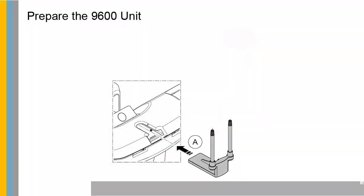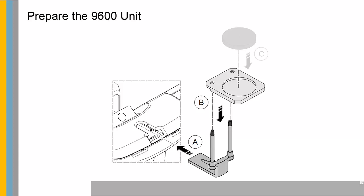To prepare the unit for acquisition, first insert the 3D bite block support into the chin rest base. Then place the dental impression holder on the 3D bite block support. Next, place the black foam on the dental impression holder.